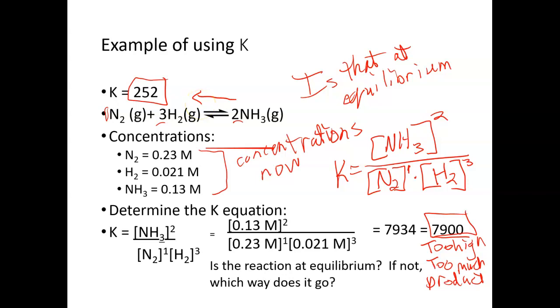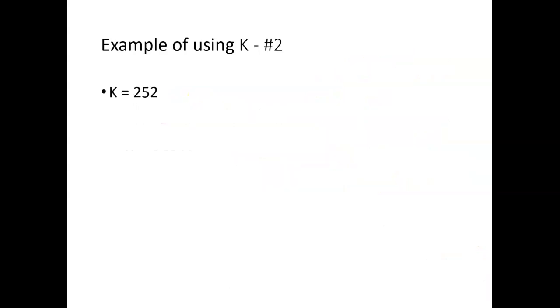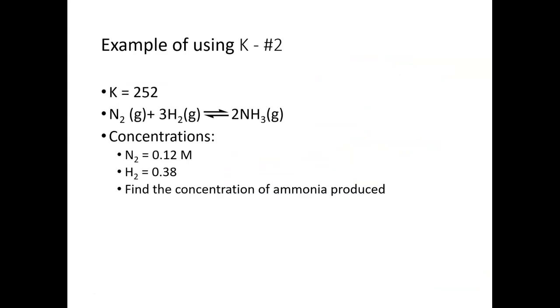Let's take a look at a second example. I'm going to use the same equation. In this case, it's still got a K value of 252 for this particular reaction at the conditions I'm looking at. I know the concentration of nitrogen, I know the concentration of hydrogen, and I want to find the amount of ammonia or NH3 that's produced at equilibrium.